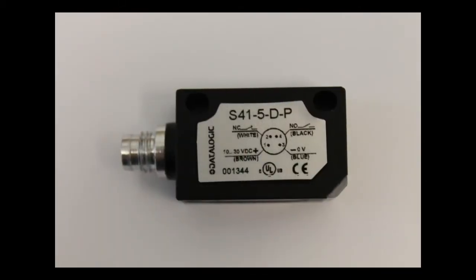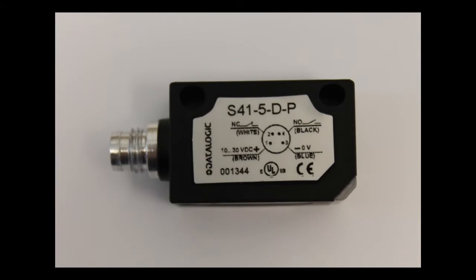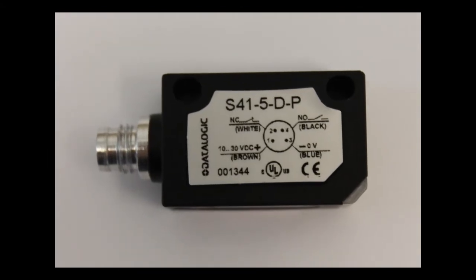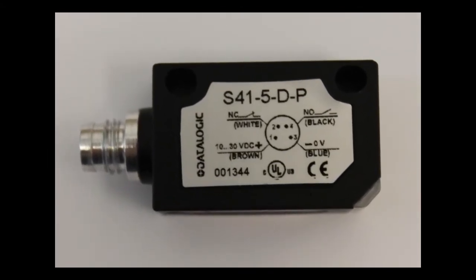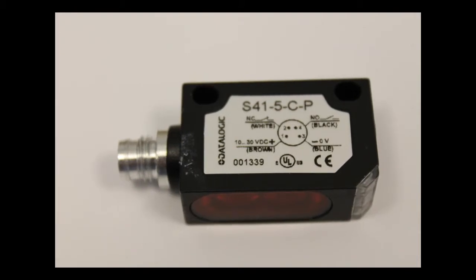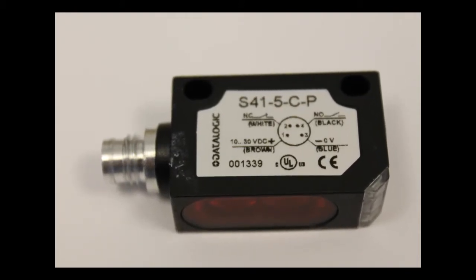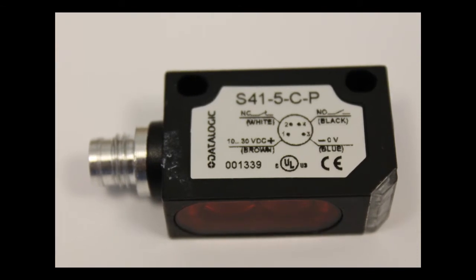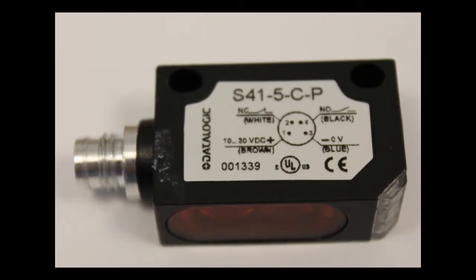There will be occasions however when the diffused reflective sensors are a better option. The DP being the short range version of around 100mm and the CP being the long range version of up to 350mm. The beam is reflected off the package itself rather than a specially mounted reflector.